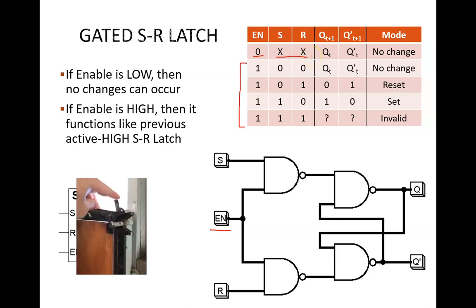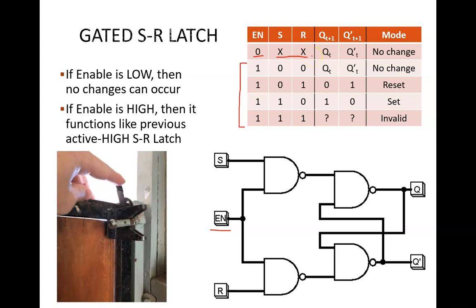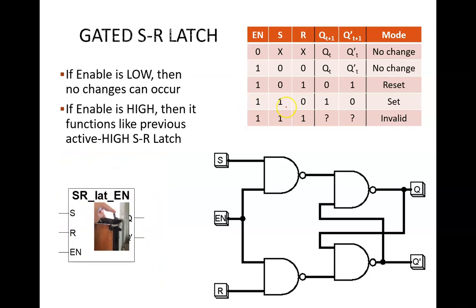This makes the circuit behave like the physical door we started the video with. In order to open the door, two things must happen. First, I must flip up the latch. This is like setting EN equal to 1. Second, I must push the door open. This is like setting S equal to 1. Only with those two actions can a change occur. This enable signal makes the device more useful for memory purposes. We can enable the latch while we store new data. Then we can disable the latch for as long as we want that data stored.